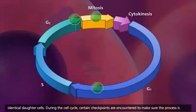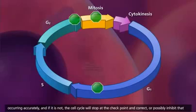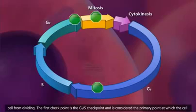During the cell cycle, certain checkpoints are encountered to make sure the process is occurring accurately. And if it is not, the cell cycle will stop at the checkpoint and correct, or possibly inhibit that cell from dividing.